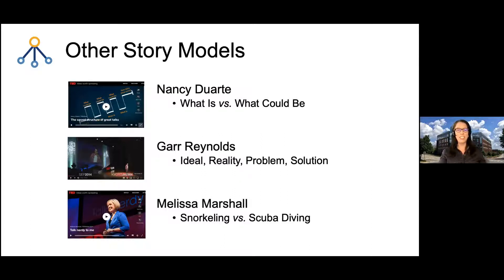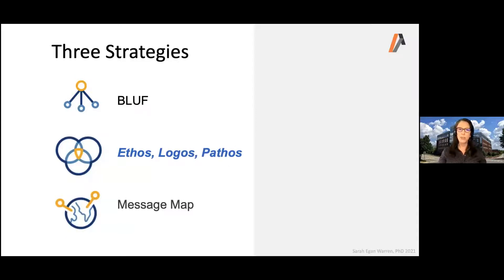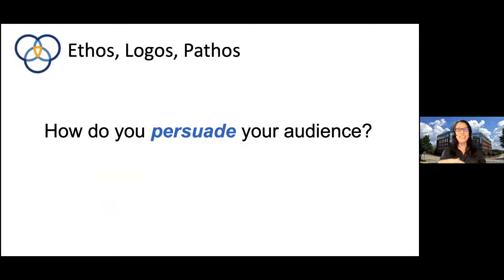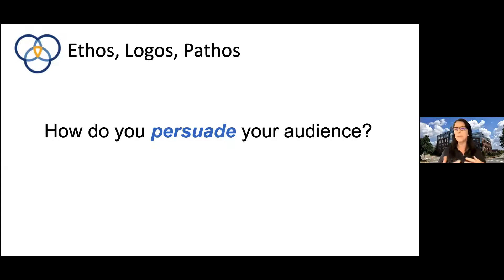Let's move on to strategy number two: using ethos, logos, and pathos. There may be a little spark in the back of your mind from high school English or a philosophy class — you remember ethos, logos, and pathos. This is how we persuade people — the three means of persuasion. I'm going to talk about each one and show you how they can be used in a data presentation to help your audience understand and be persuaded that your analysis is the best they can adopt.